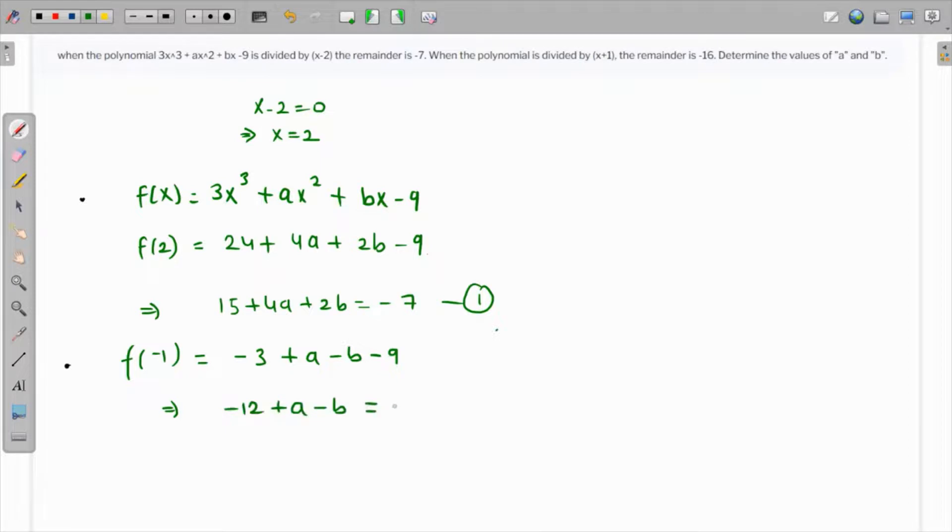From equation 1, we can simplify. Adding 7 to both sides: 22 + 4a + 2b = 0. Dividing both sides by 2: